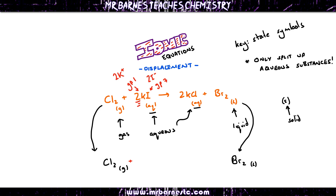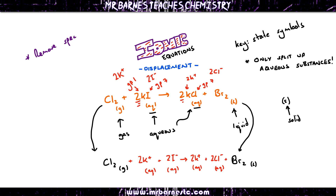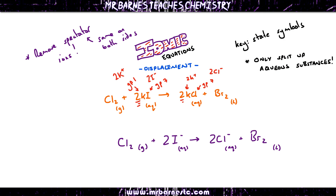So my reactants are now Cl₂ + 2K+ + 2I−. Doing the same on the right-hand side: potassium stays the same as 2K+, and chlorine in group 7 gains one electron and becomes Cl−. So my products are 2K+ + 2Cl− + Br₂. Now remove the spectator ions — the ones that are exactly the same on both sides — which is the 2K+. Getting rid of those gives my ionic equation: Cl₂ + 2I− → 2Cl− + Br₂. That is the complete ionic equation.